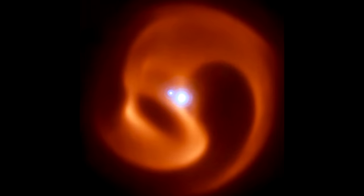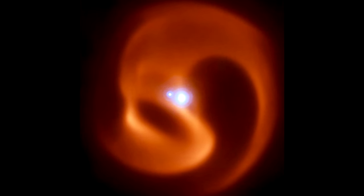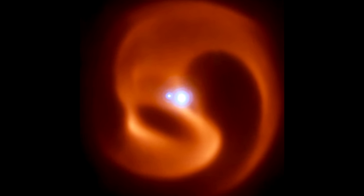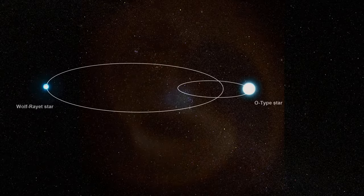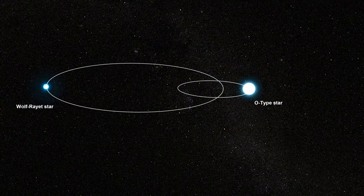There is evidence that these stars, through interactions with a companion star, produce large amounts of dust in a distinctive pinwheel pattern as the two stars orbit each other and their stellar winds collide, as shown in this image.